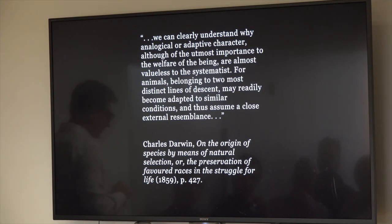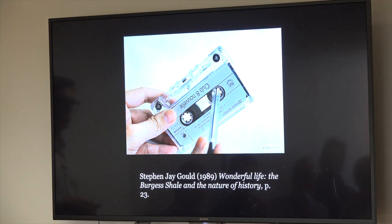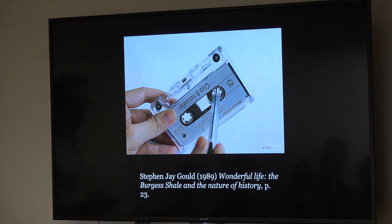What I really like to do is think about the synthesis of those two things which is to ask the question, you know, if you tessellate the sky, there's 32 million of those Hubble extreme deep field images around us and each one of which has 5,500 galaxies. So that's how big the universe is. How many times did we have something like Cloudina appear on some distant planet in some distant galaxy? I expect much more likely than we currently know but who knows. So Darwin touched on this question in a certain sense. He said we can clearly understand why analogical or adaptive character, although of the utmost importance to the welfare of the being, are almost valueless to the systematist.